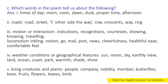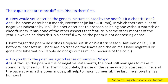Category 5: Living creatures and plants. People, company, nobility, member, butterflies, bees, fruits, flowers, leaves, birds.